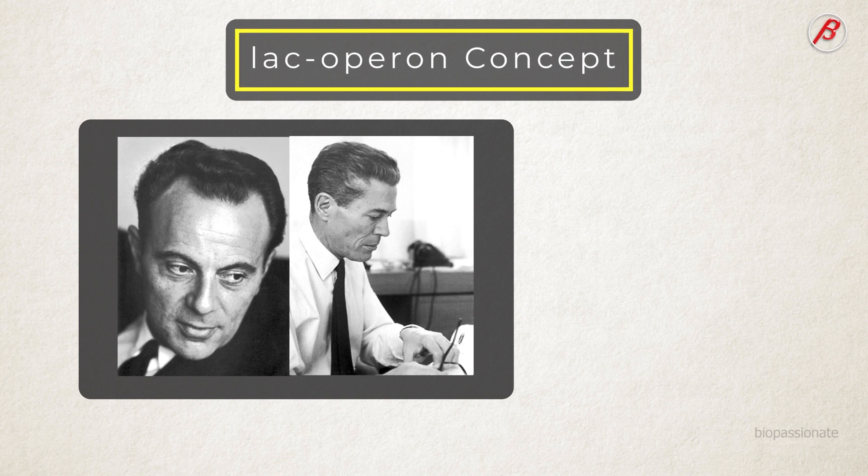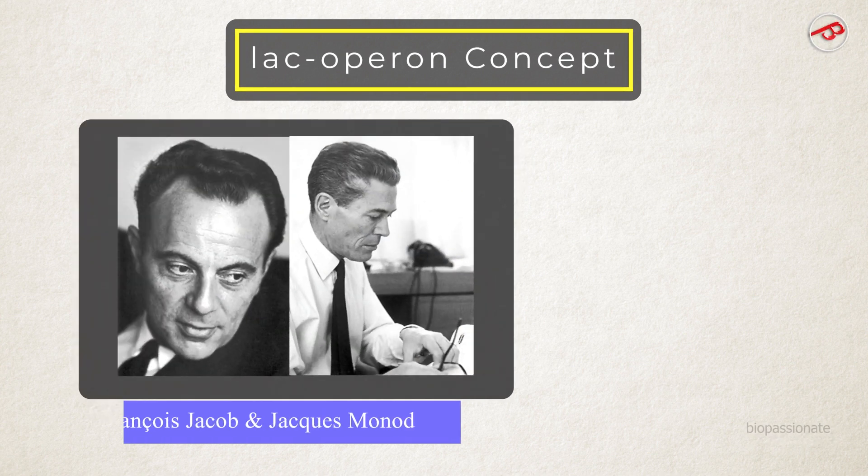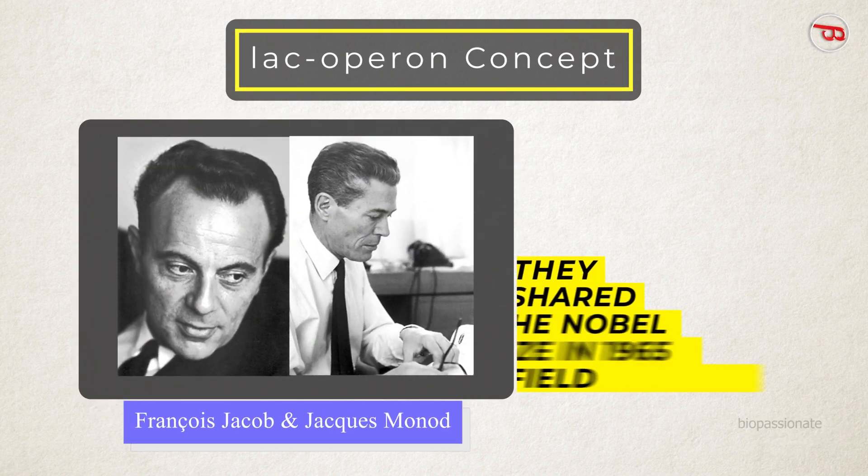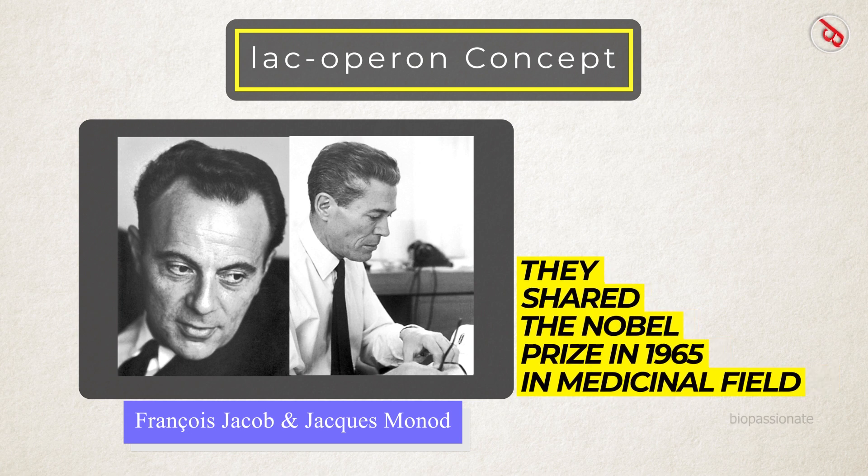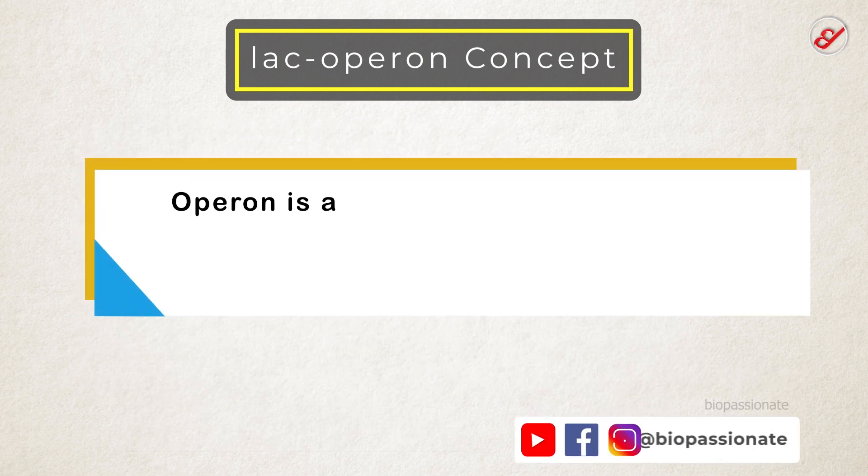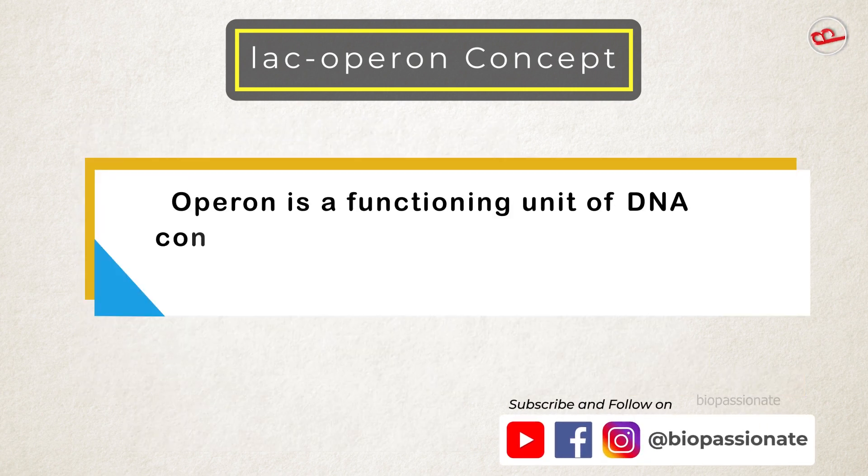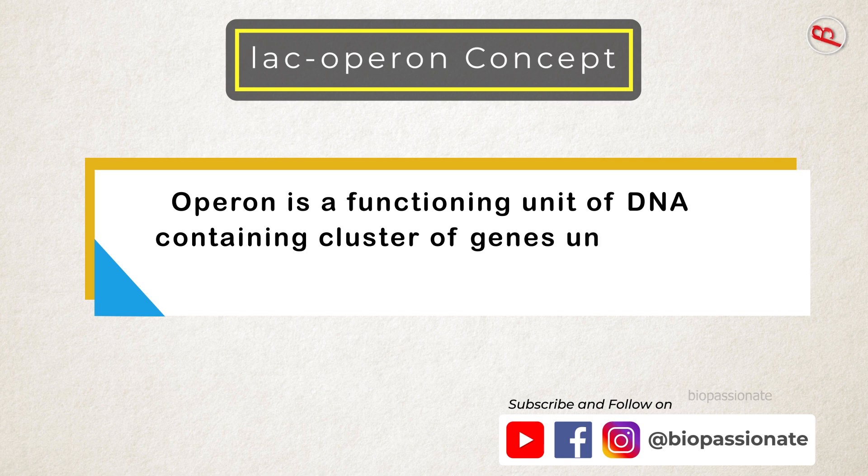The lac operon concept was proposed by Jacob and Monod in 1965, and they shared the Nobel Prize in medicinal field for their tremendous work. What is operon? Operon is a functioning unit of DNA containing a cluster of genes under the control of a single promoter.